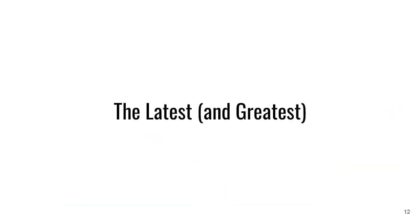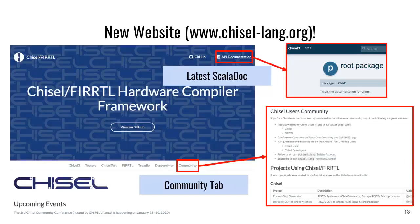That's the history of Chisel and FIRRTL and why we made some of those design decisions. Now I'm going to go into the latest and greatest section. We have a new website. A few things to point out: we do publish the Chisel 3 API Scala doc, so if you want to know what all the functions in Chisel mean, we have published API documentation you can view. We also have a new community tab — if you're a Chisel user and want to stay connected, there are links and other resources.